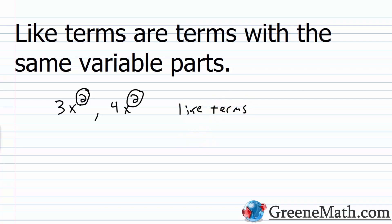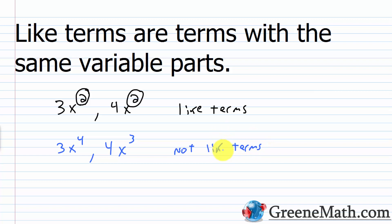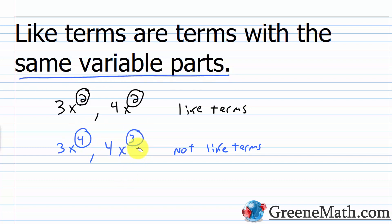But if I had something like 3x to the fourth power and 4x cubed, these are not like terms. They're not the same — you have an x and an x, but you have a 4 and a 3 as exponents. You have to have the same variable parts. We could have like terms if we changed this to a 4, but we were given an exponent of 3 there, so these are not like terms.